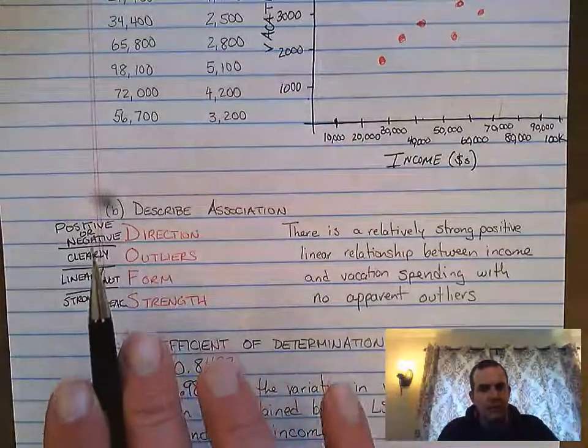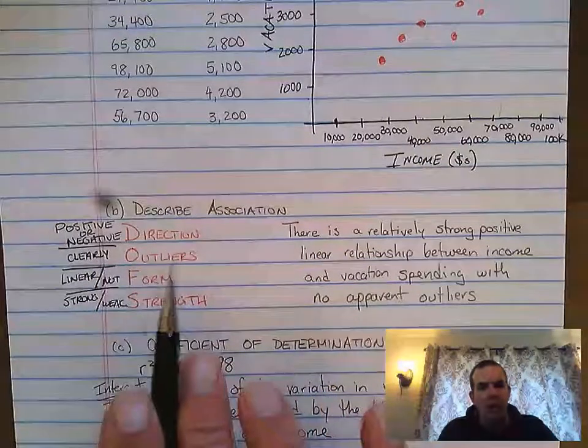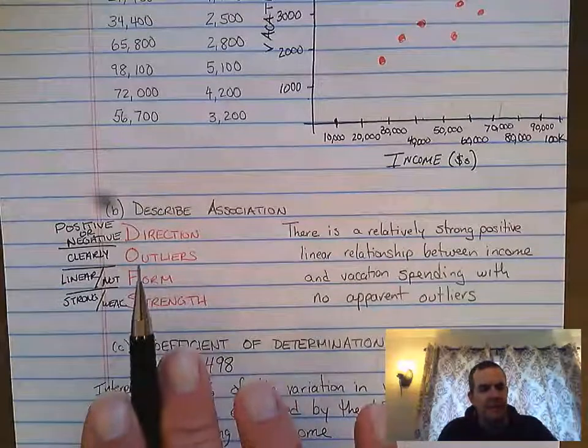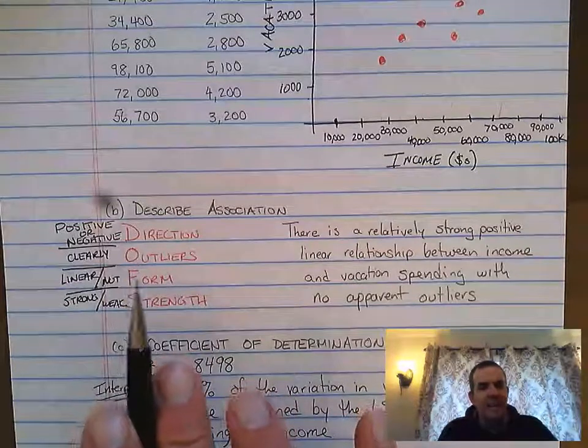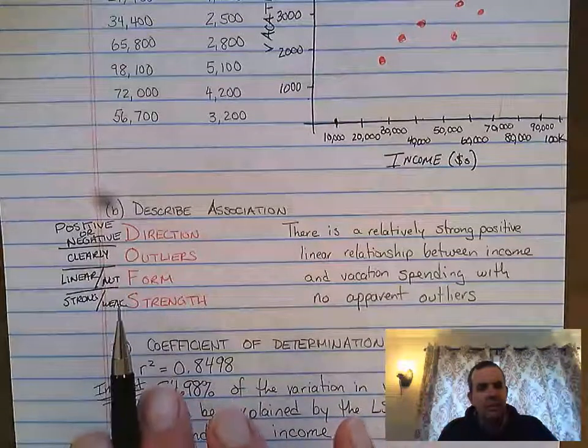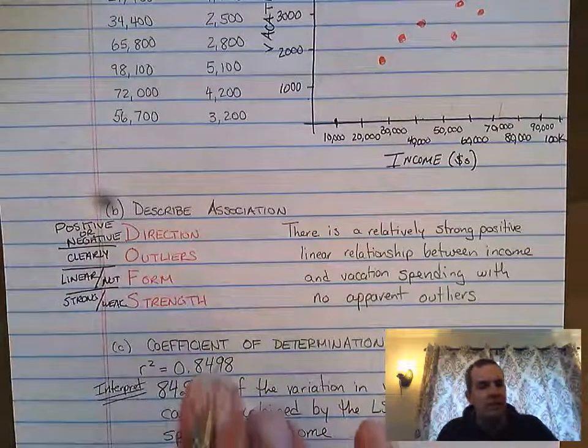D stands for direction - it's either going to be positive or negative. O are outliers, they'll clearly be obvious from the graph. Don't try and make something an outlier that's not. Your form is either going to be linear or not linear, and your strength is going to be stronger or weaker - it's basically how closely it fits to a line.